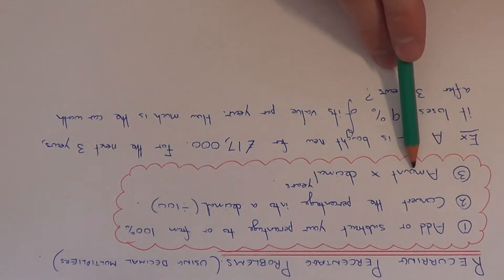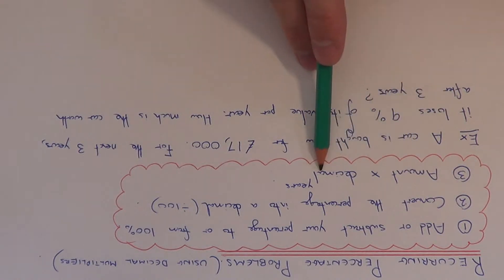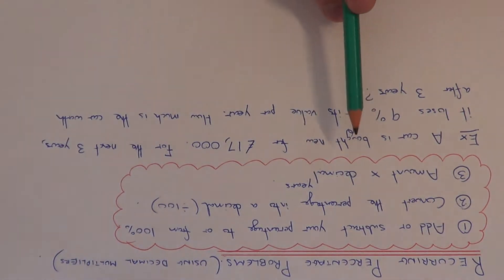And then the third and final step is to multiply the amount by your decimal, and if you're doing it for two, three, four years, you do to the power of this amount of years.